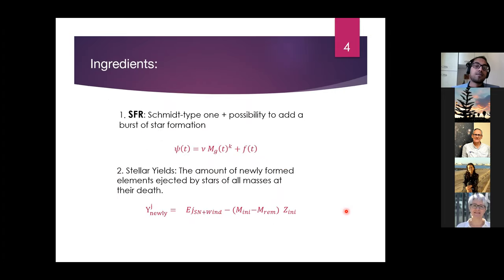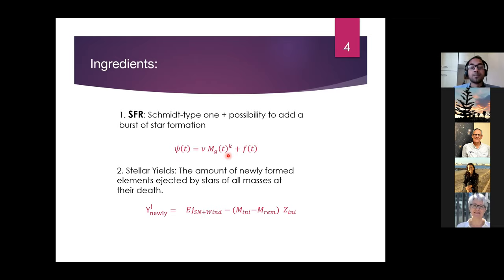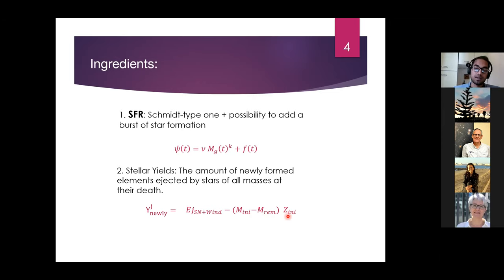The first important ingredient is the star formation rate, assumed to be a Schmidt-type law where ν is the efficiency and k is the exponent. There is also a possibility to add a burst of star formation using an analytical F(t) term, but for this work we have not used it to keep things simple. The second important ingredient is stellar yields — the amount of newly formed elements ejected by stars when they die. The total ejecta is given as the ejecta from supernovae plus ejecta from stellar winds. M_initial is the initial mass, M_remnant is the mass of the remnant, and Z_initial is the initial metallicity.